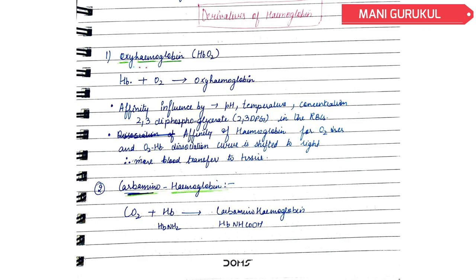Now the derivatives of hemoglobin. First of all is Oxyhemoglobin: Hemoglobin plus Oxygen gives Oxyhemoglobin. Its affinity increases based on pH, temperature, concentration, as we have discussed previously, and 2,3-DPG. When 2,3-DPG increases the oxygen dissociation curve is shifted to the right.